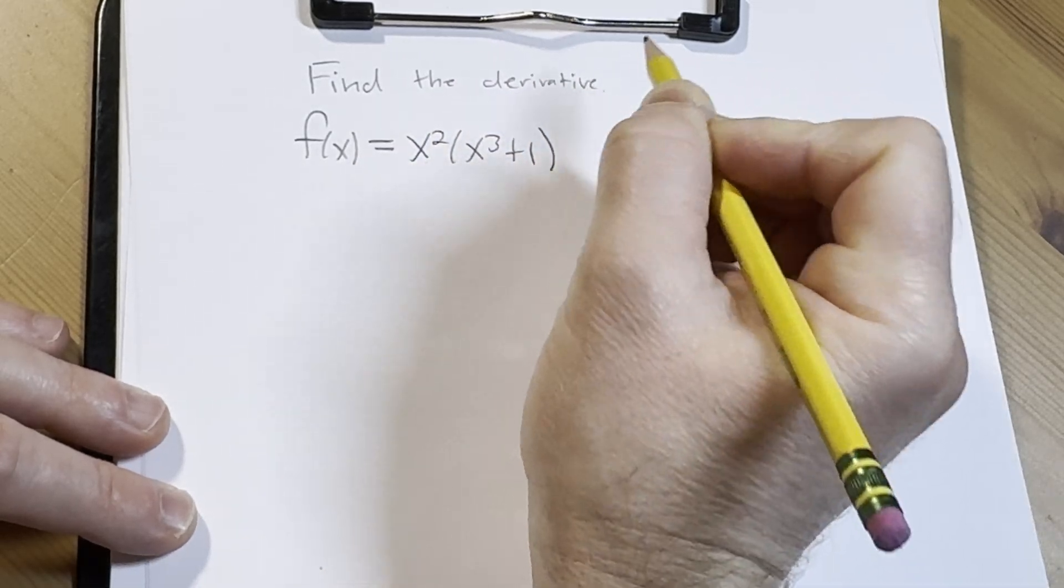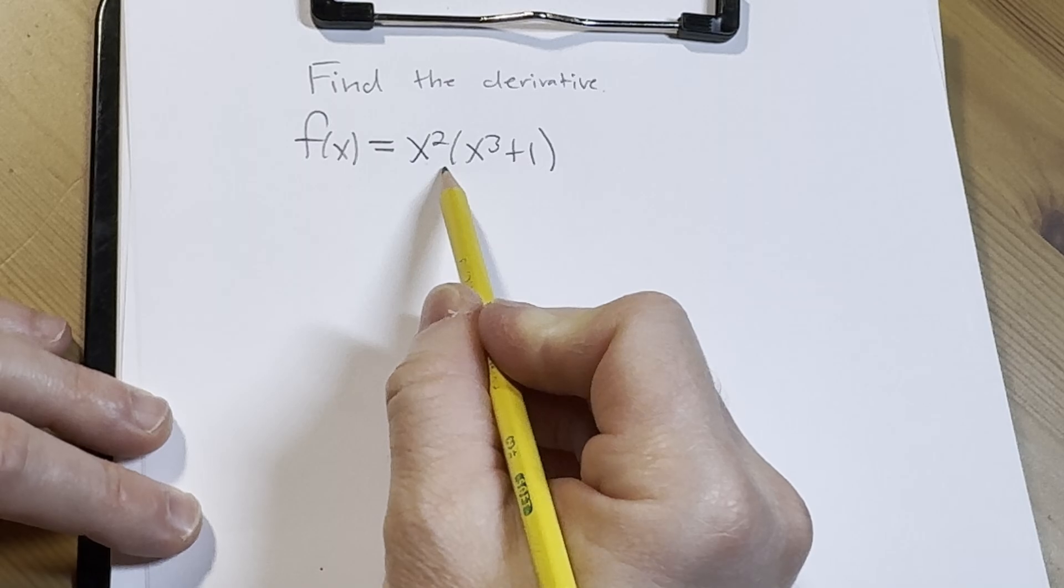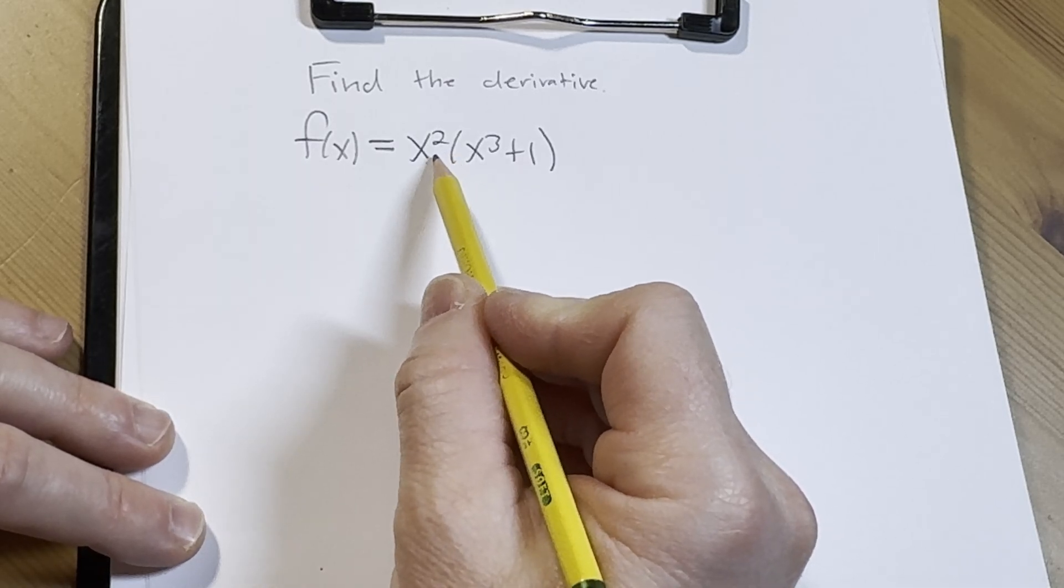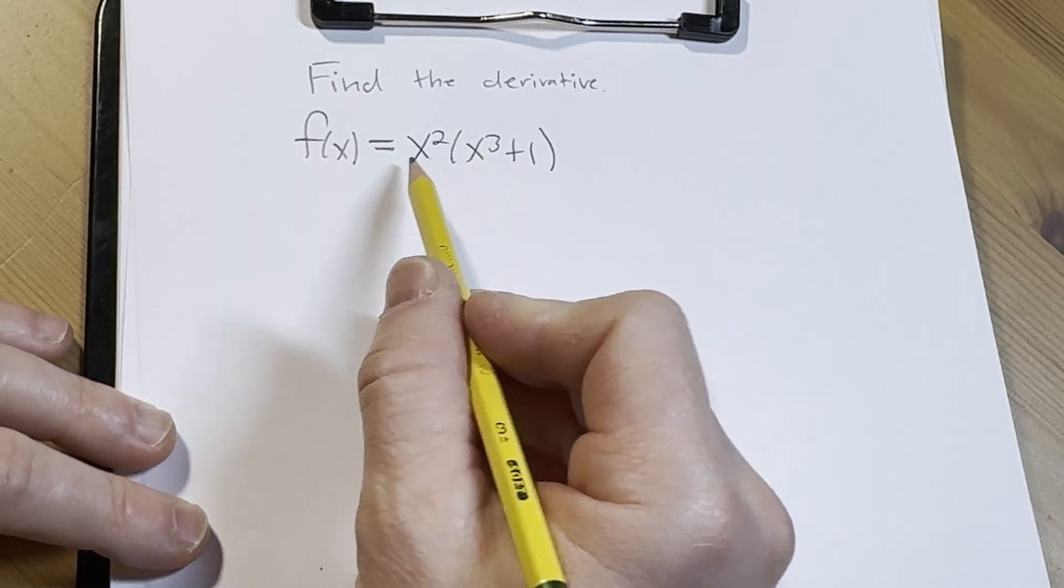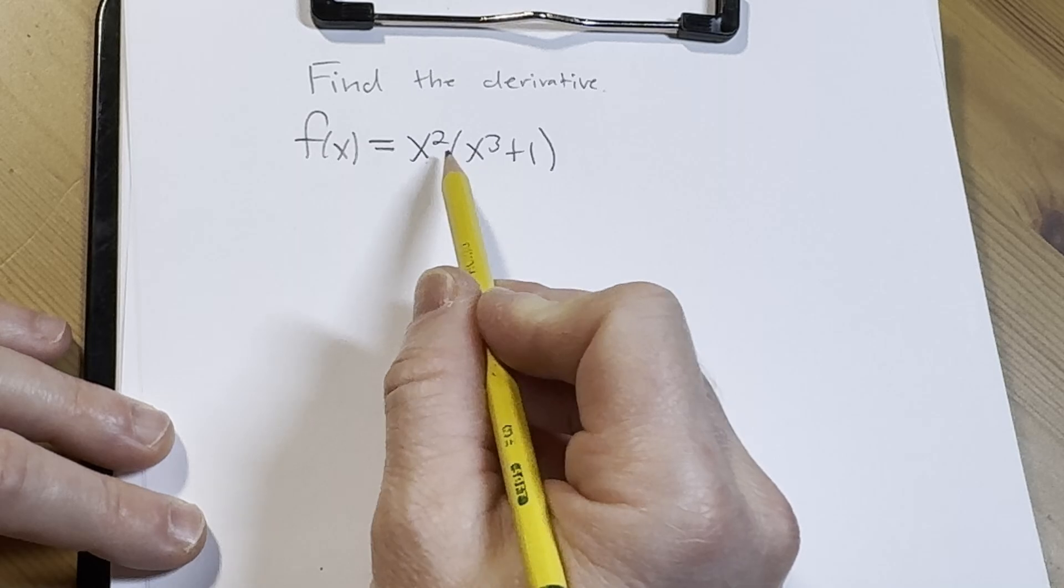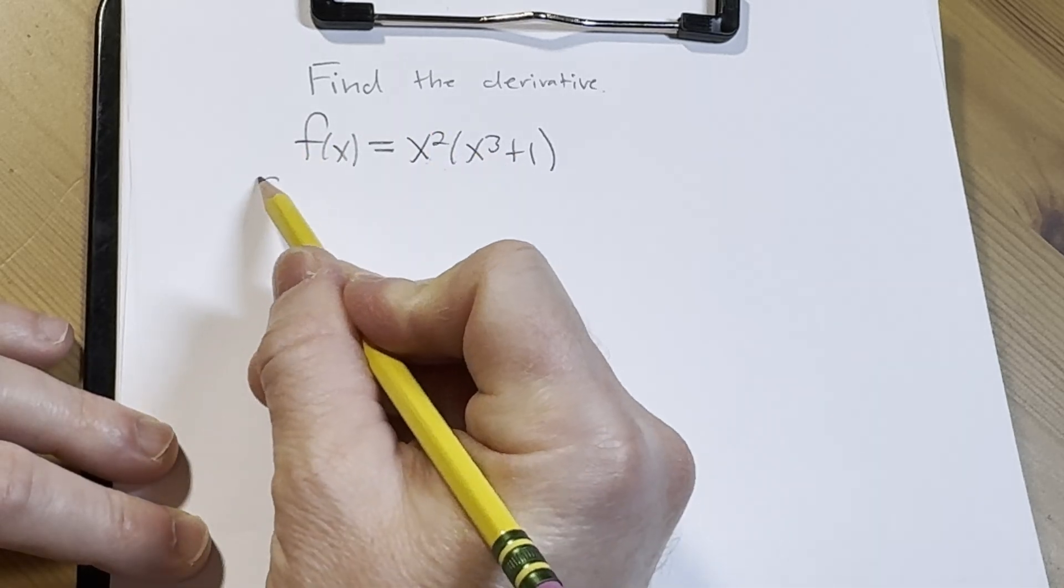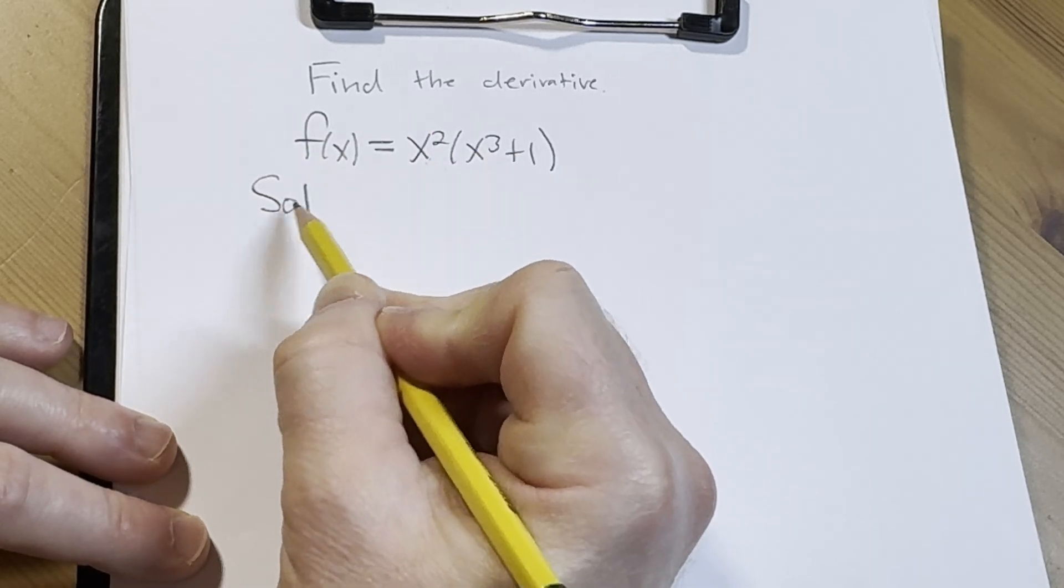So there are a couple ways of doing this problem. You'll notice right away there's a product, so it seems like using the product rule is the best way to go. However, you could easily distribute this and avoid the product. So let's go ahead and do that.